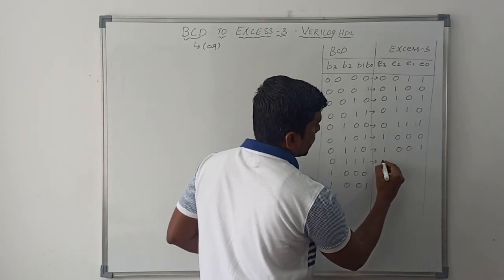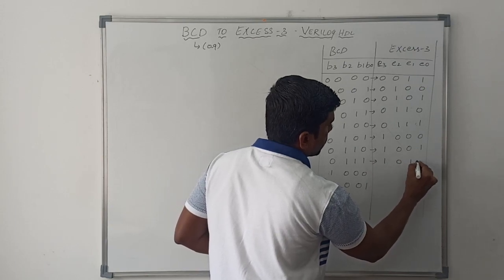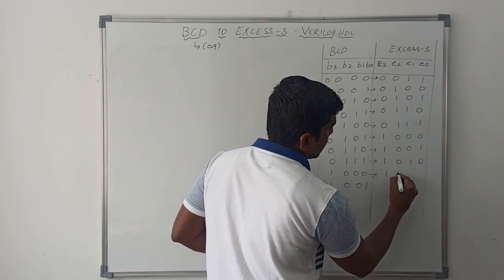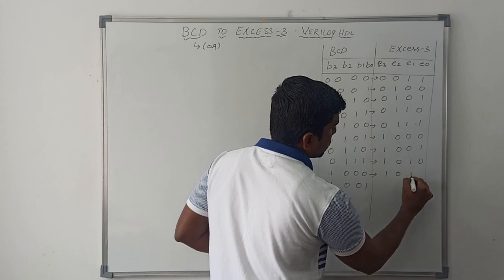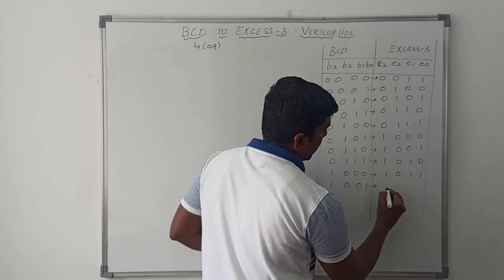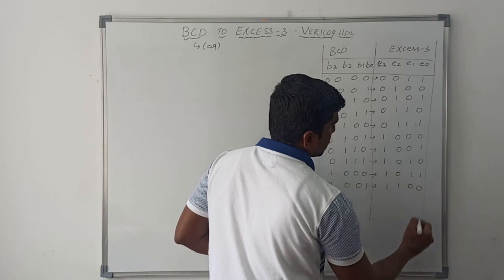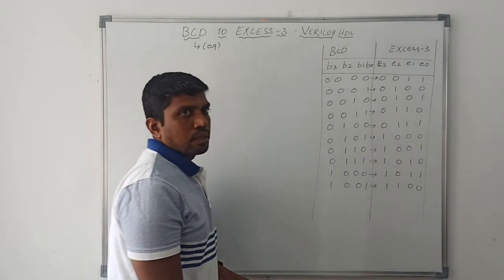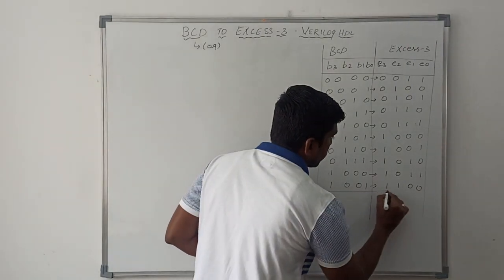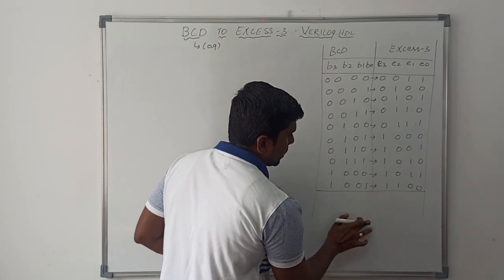7 equals XS3 value 10, which is 1010. 8 equals XS3 value 11, which is 1011. 9 equals XS3 value 12, which is 1100. So far we have completed the truth table for BCD to XS3.